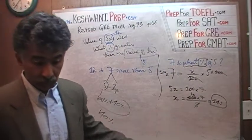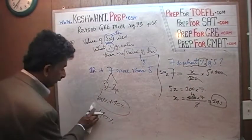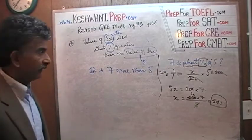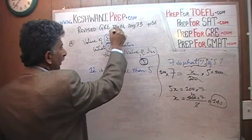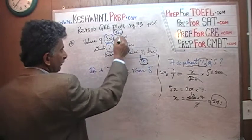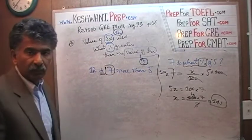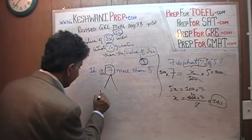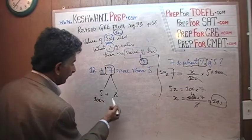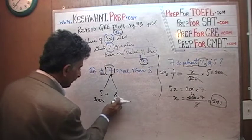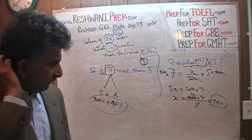To recap: the first thing we did was ask how much more the new value is compared to the old value. The old value was 5, the new value was 12 — that's 7 more. Then we asked what 7 represents as a percent of 5. Seven is made of 5 and 2; 5 is 100%, and 2 compared to 5 is 40%, so the increase was 140%.